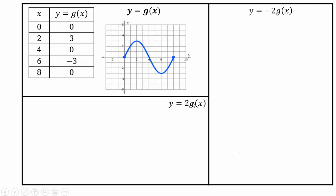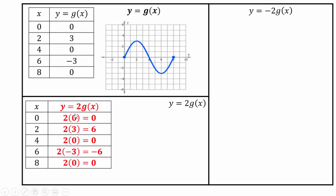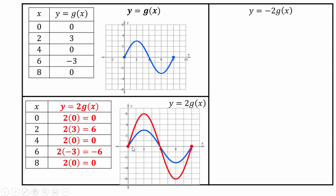For 2 times g(x): take the old y coordinates and multiply by 2 — the x coordinate remains the same. So you get 2×0, 2×3, 2×0, 2×(-3), 2×0, giving points (0,0), (2,6), (4,0), (6,-6), (8,0). Plotting these shows the red graph is stretched vertically by a factor of 2.